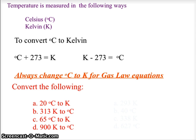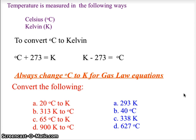For Celsius to Kelvin conversions, we add 273; for Kelvin to Celsius, we subtract 273. For the gas laws, we always, always, always convert Celsius to Kelvin. The practice problem answers are: 20°C equals 293 K; 313 K equals 40°C; 65°C equals 338 K; and 900 K equals 627°C.